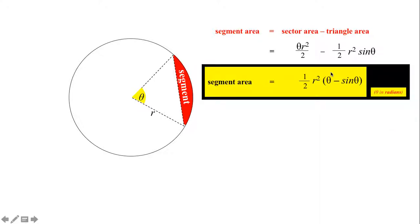We can factorize ½r² out of that, because both terms have a half and r squared in them. So that's the same as ½r² brackets (θ − sin θ). That gives us a neat little formula for the area of a segment: ½r²(θ − sin θ), when the angle theta is in radians.